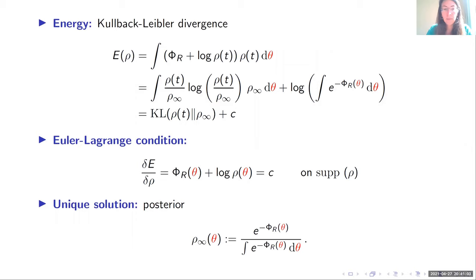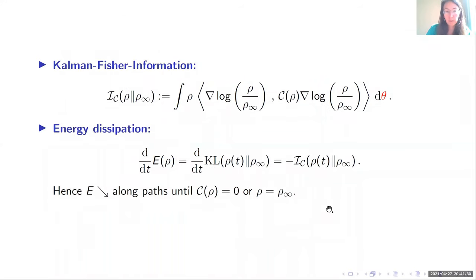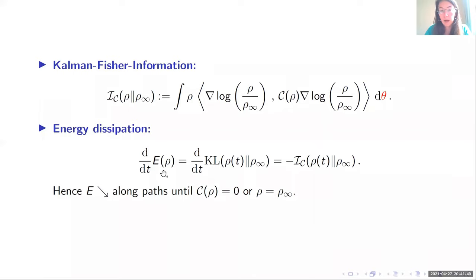The energy in our context is the one with first variation equal to phi_r plus log rho plus a constant — that gives us exactly the KL divergence plus a constant. The unique solution of the corresponding Euler-Lagrange condition is exactly our posterior distribution. Computing the time derivative of this energy along paths gives exactly minus the Fisher information, where the inner product is now weighted with the covariance matrix. From this alone, you can see that the energy always decays along paths until either the covariance is zero (then the Fisher information is zero) or rho equals the posterior distribution.